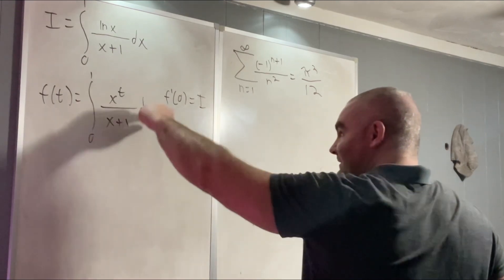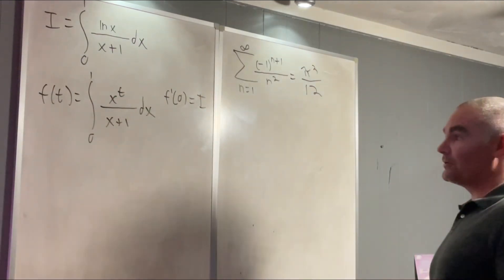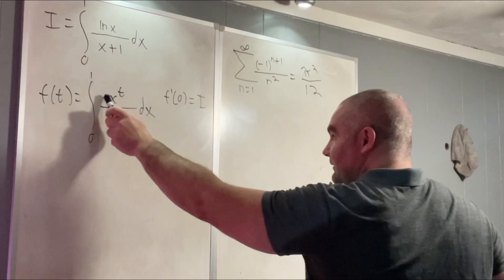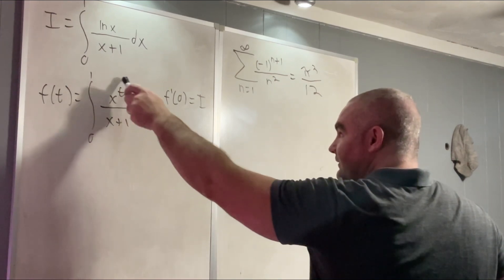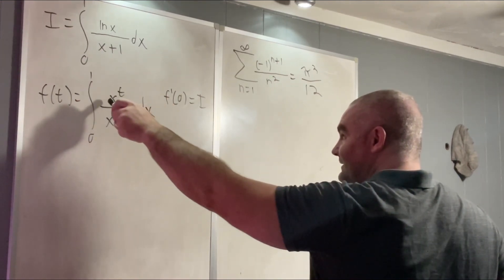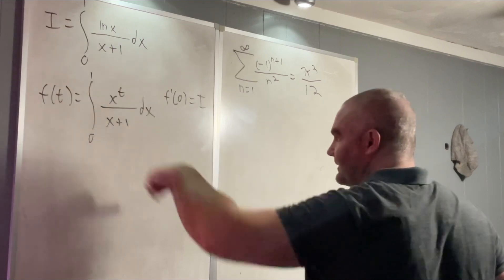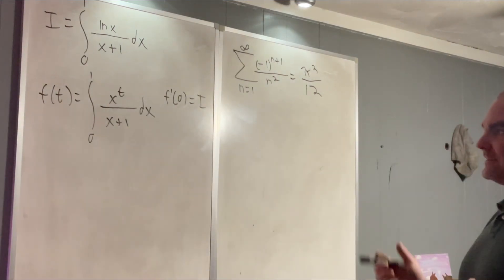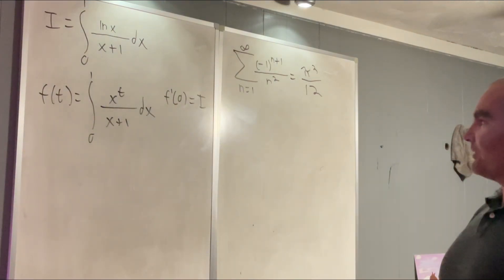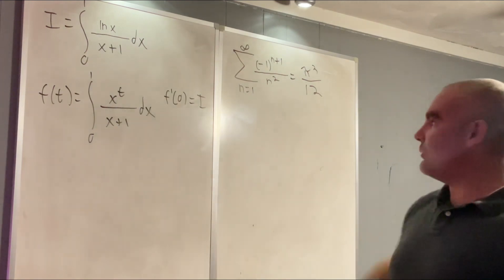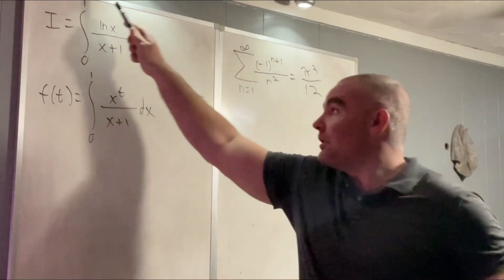If you take a derivative of this with respect to t using the Leibniz rule, you'd simply take a partial derivative of this with respect to t, giving you natural log x times x to the t over x plus 1 dx. And then if you evaluate that at 0, you just end up with this.